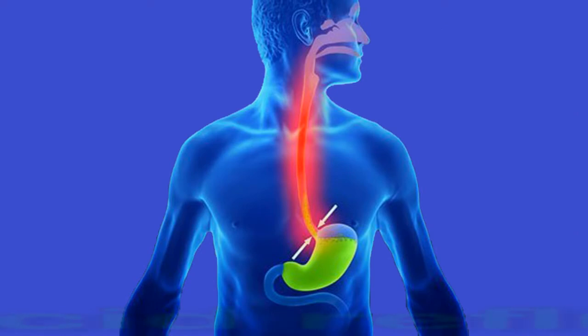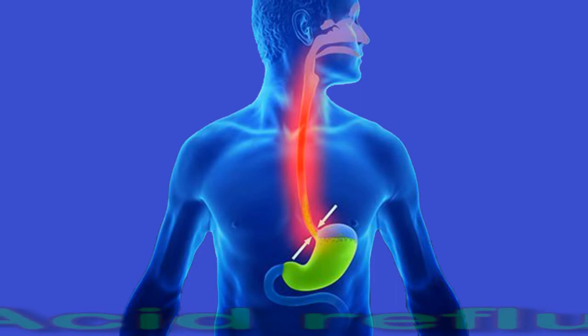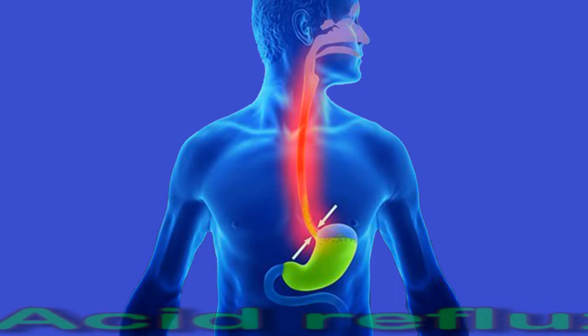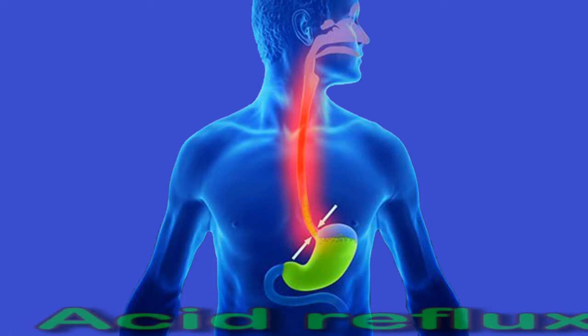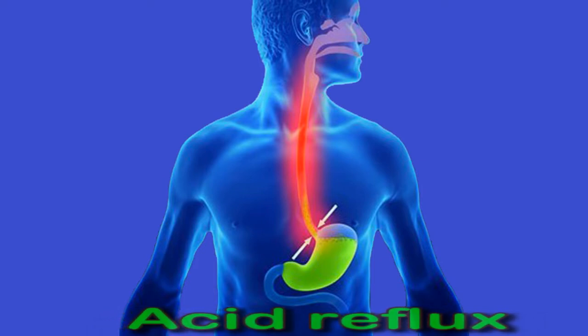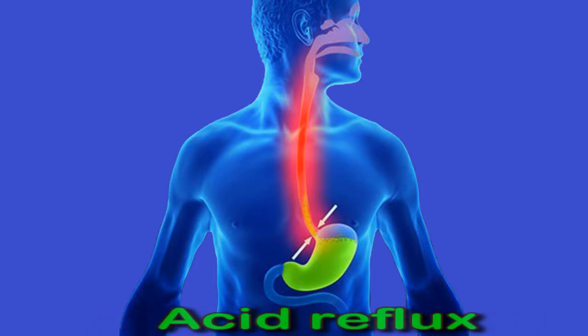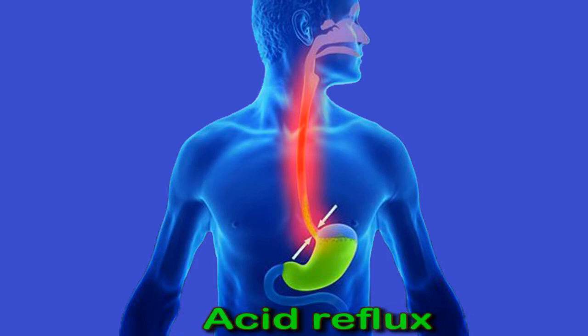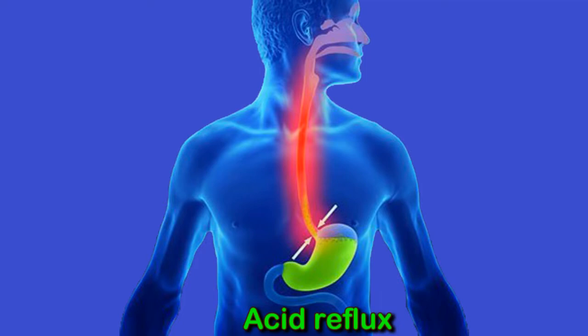Acid reflux: acid reflux occurs when the contents of the stomach come back up the esophagus. The acidity of the stomach's contents can cause irritation in the esophagus, which causes pain when swallowing. People can purchase over-the-counter medications to relieve occasional acid reflux and indigestion. Occasional acid reflux is common and typically not a cause for concern, but if someone often has heartburn or acid reflux, they may have gastroesophageal reflux disease, or GERD.